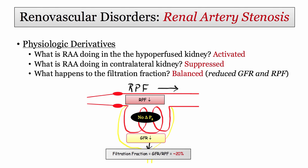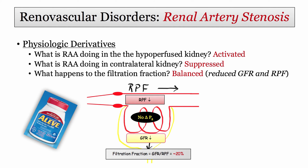What happens to filtration fraction when the afferent arteriole is constricted, as occurs during renal hypoperfusion? It doesn't change. With afferent arteriolar constriction — or dilation for that matter — we are dealing with a pre-glomerular issue. Whereas the renal plasma flow is decreased, the GFR is proportionally decreased. That's a fun little derivative, which also pops up when discussing the vascular effects of non-steroidal anti-inflammatory drugs, which interfere with prostaglandin-mediated dilation of the afferent arteriole.